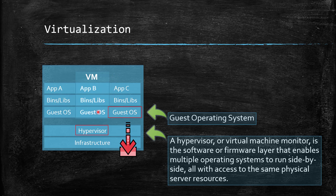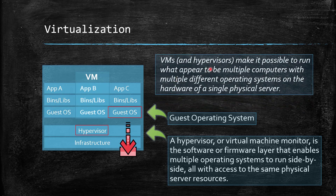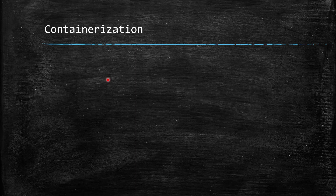So basically we are running different operating systems side by side on a single physical server — one could be Windows, another could be Linux. Virtualization and hypervisors make it possible to run what appear to be multiple computers with multiple different operating systems on the hardware of a single physical server. That's the core concept behind virtualization.